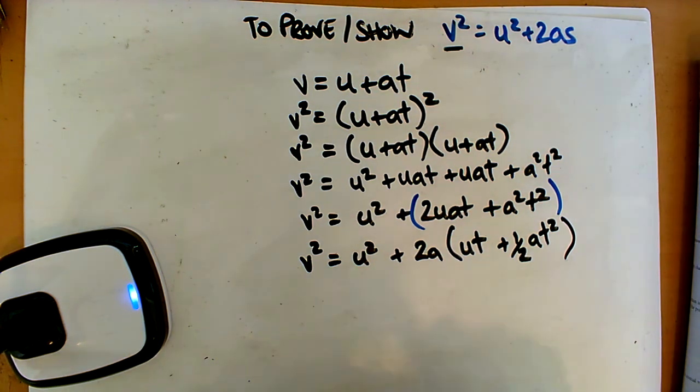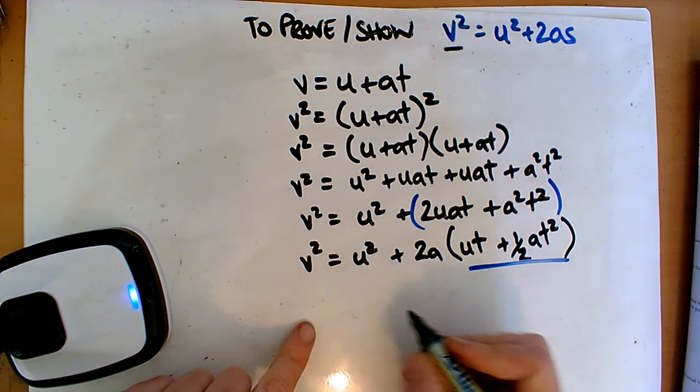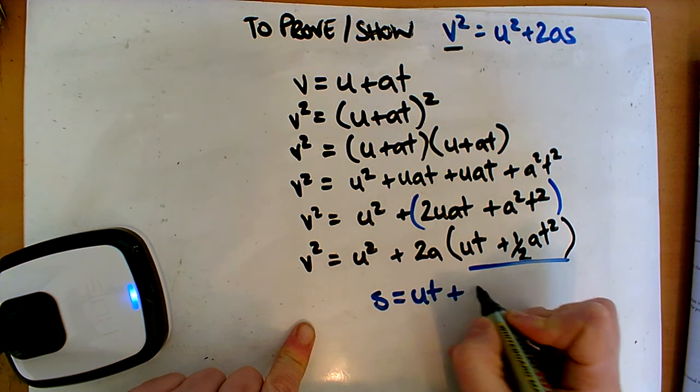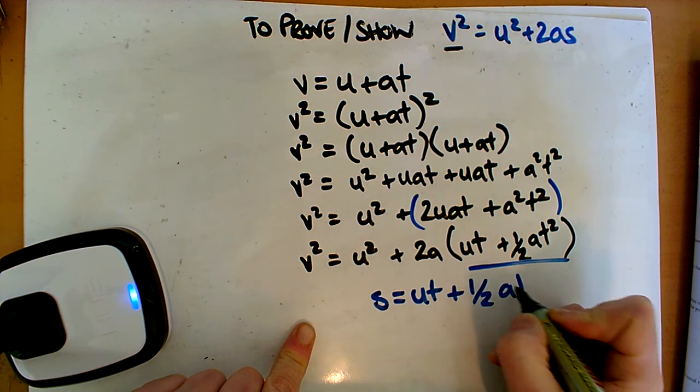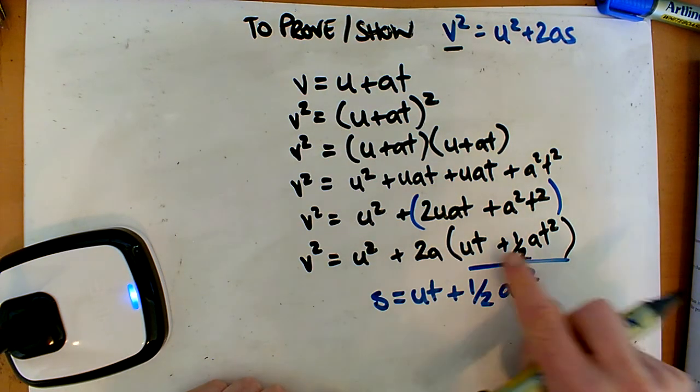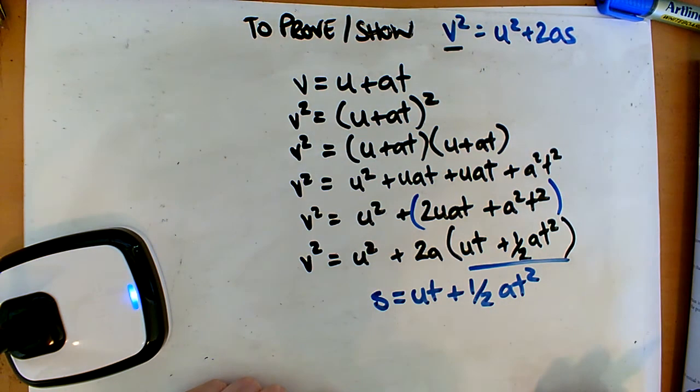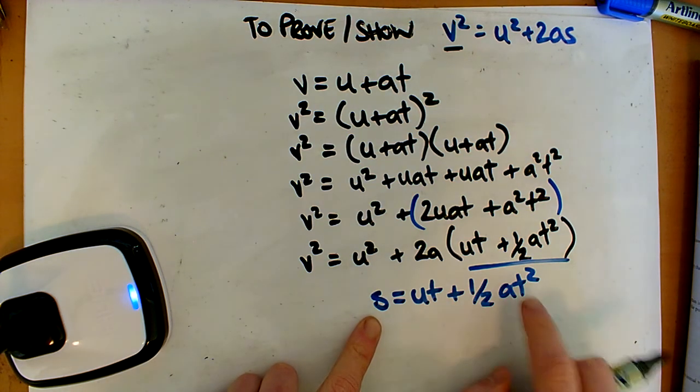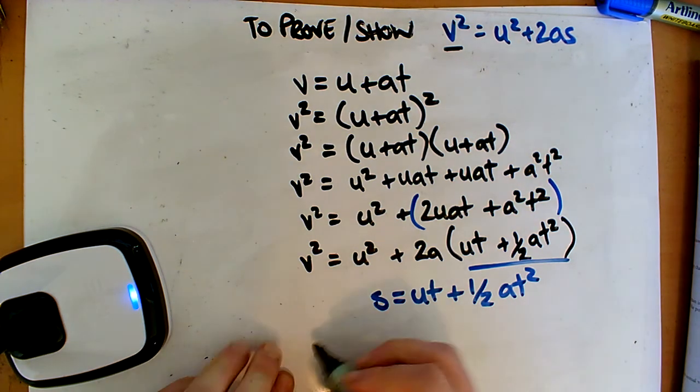Now, this should look familiar. So, if you remember, the other UVAST equation, s = ut + ½at². That, of course, is in your log tables. You don't need to remember this. And you can see that this is s, and that's exactly what we were looking for. So if we know that that's that, we just have to say that inside this bracket is equal to s, and we're done.